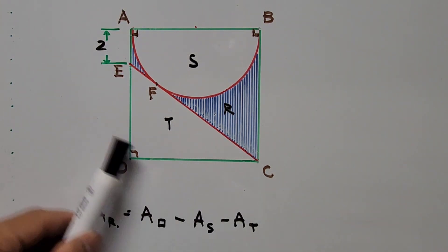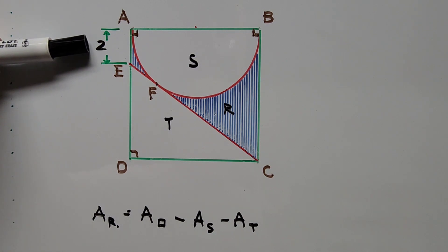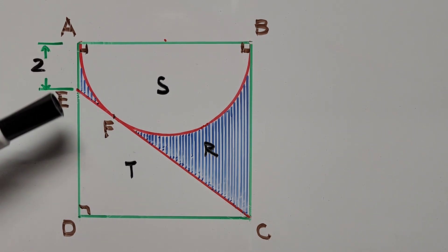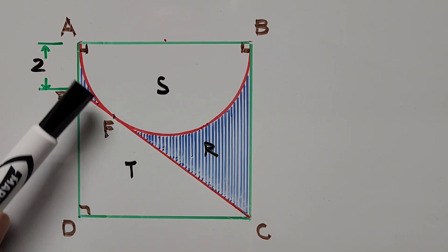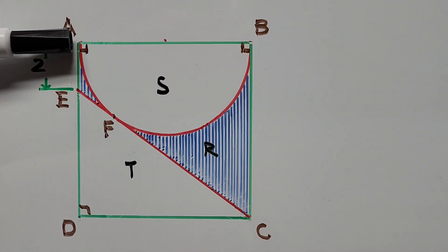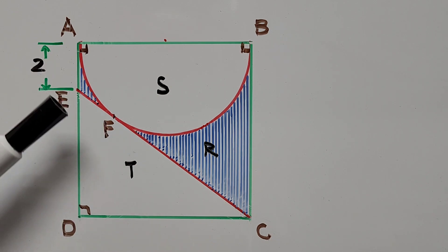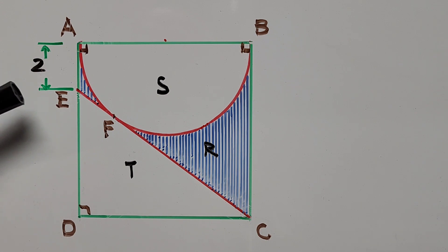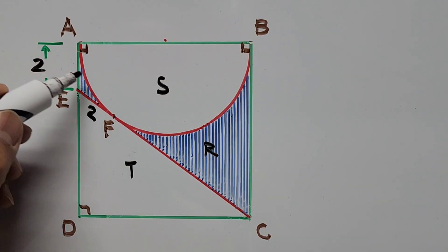To find the area of the square, we need to calculate its side, which we'll derive from segment AE. Based on the two tangent theorem: if two tangent segments are drawn to one circle from the same external point, they are congruent. Segment AE is two units, and segment EF is also drawn to the semicircle from the same external point E. Therefore, segment EF equals segment AE, which means EF is also two units.